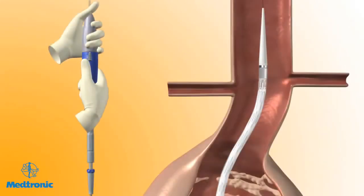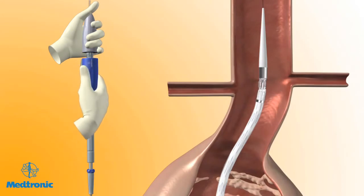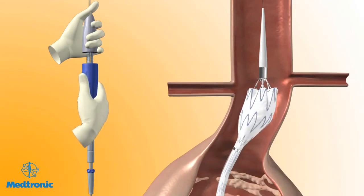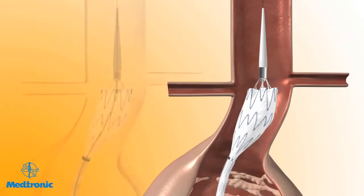With one hand on the front grip, hold the Endurant Aortic Delivery system stationary. Next, slowly withdraw the graft cover with the other hand by rotating the slider counterclockwise in the direction of the arrow until 2 to 3 of the covered stents have been deployed. Use angiography to verify the position of the stent graft in relation to the renal arteries.